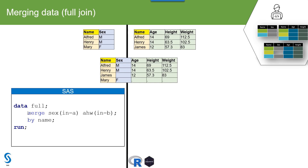In SAS we use the MERGE statement, which is part of the data step. We specify the names of the datasets we want to combine — here 'sex' and 'AHW' (age, height, and weight) — and we join records based on the values in the name variable, specified on the BY statement. SAS combines observations based on matching name values: Alfred with Alfred, Henry with Henry. For Mary, since there is no record in AHW, variables from AHW are set to null.